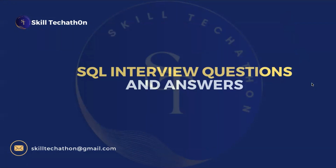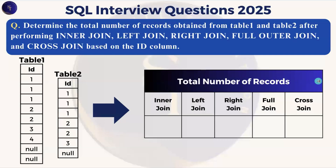Hello and welcome to Skill Techathon. This is the SQL interview questions and answer series. Today we are going to look into one of the most asked SQL questions in interviews. We have been given two tables — table one with an ID column and table two with an ID column as well — and we need to determine the total number of records obtained after performing various joins.